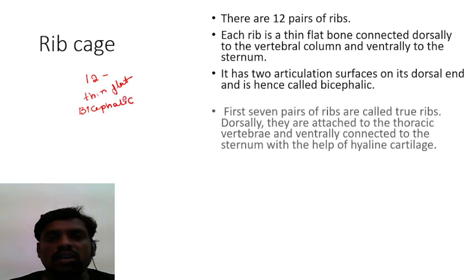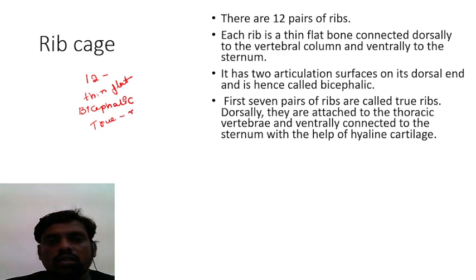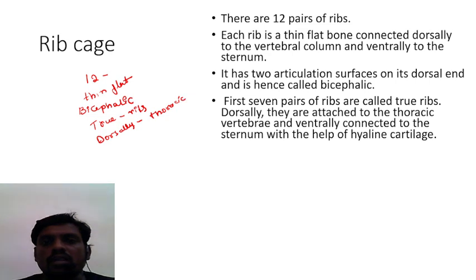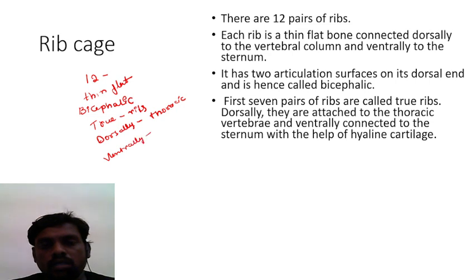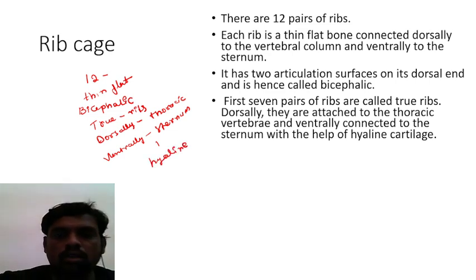The first seven pairs of ribs are called true rib bones. Dorsally, they are attached to the thoracic vertebrae, and ventrally they are connected to the sternum with the help of hyaline cartilage. Hyaline cartilage plays an important role in this connection.